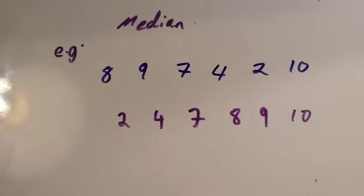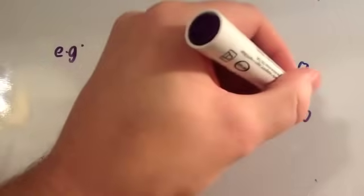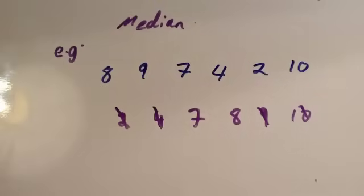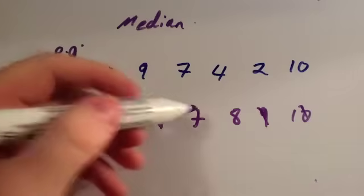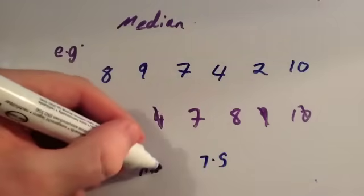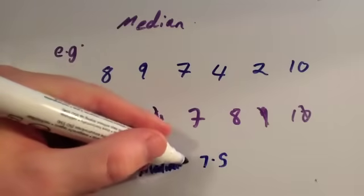Now let's find the middle one. Let's cross off the smallest and cross off the largest. Cross off the smallest, next smallest, and the next largest. It leaves you with 7 and 8 in the middle. In between 7 and 8, halfway between them, would be 7.5. So the median equals 7.5.